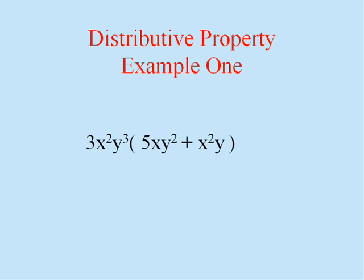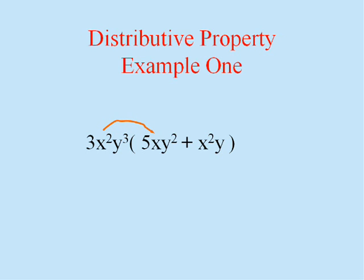Let's distribute this 3x²y³ to both of the terms in the parentheses. When I multiply these two, keep in mind that that's an x to the first. So I'm going to multiply the numbers 3 times 5, that's 15, x² times x¹, I add exponents, and y³ times y², and I get 15x³y⁵.